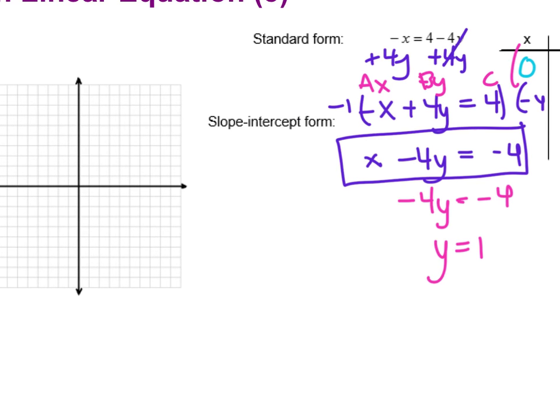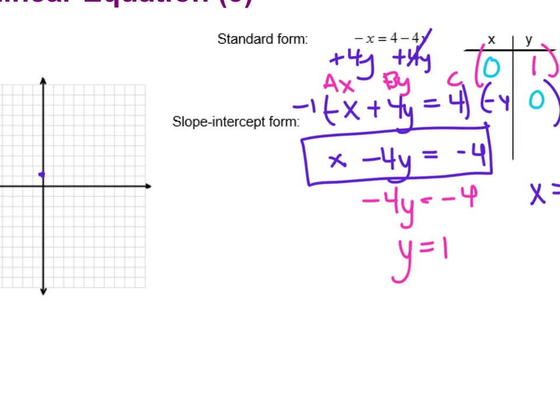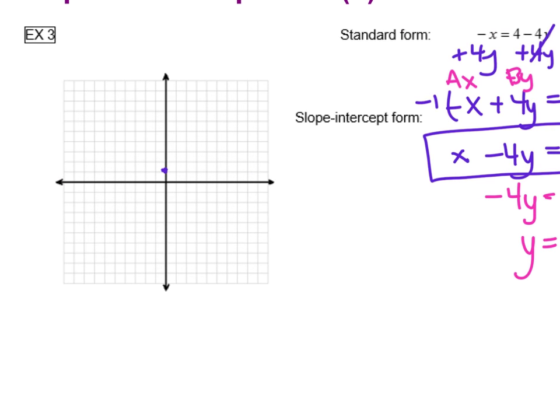The first one is 0 comma 1. So you go up 1 on the y-axis. And the second one is negative 4 comma 0. So you go negative 4 first and you don't go up or down for the y at all.